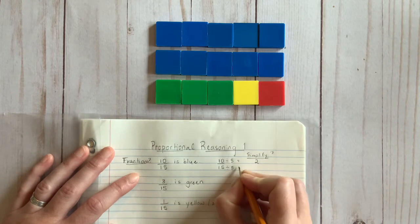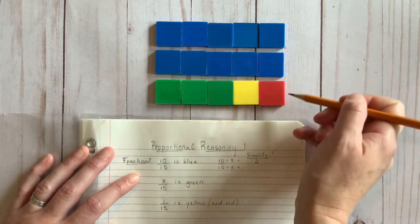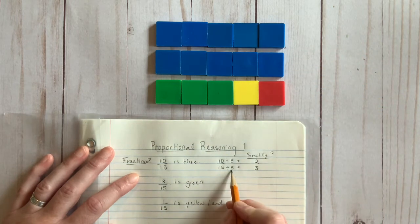When I divide the denominator into groupings of five, I end up with one, two, three groups in the whole. The fraction again? Two-thirds.